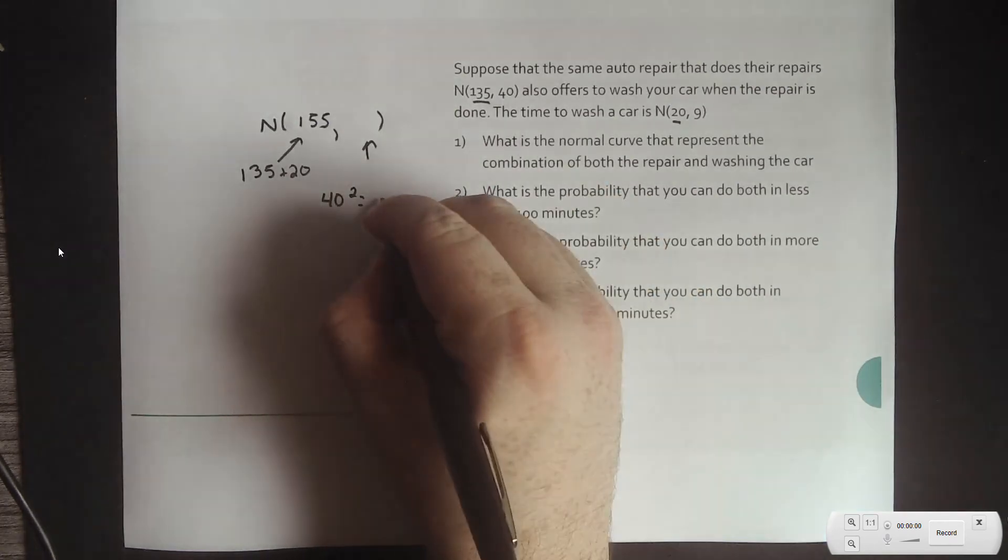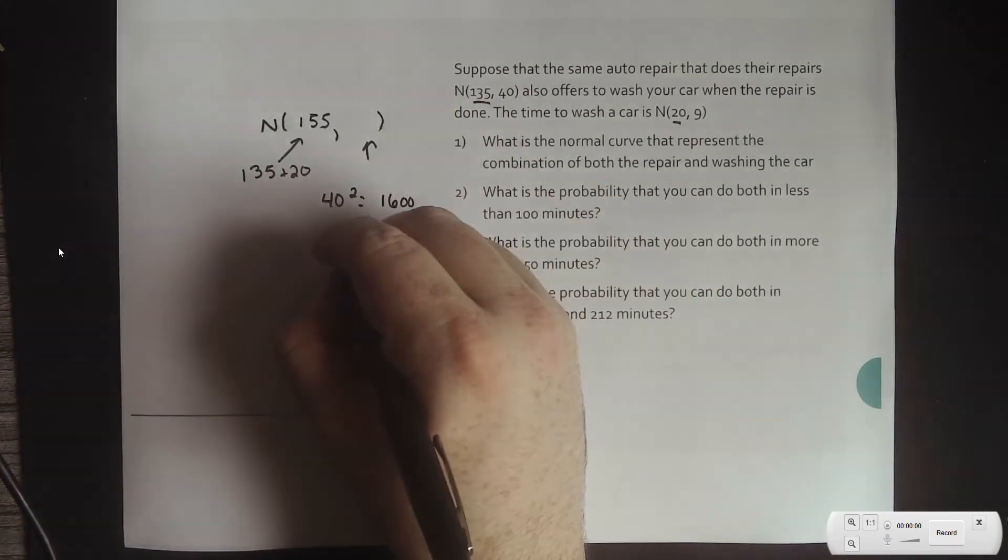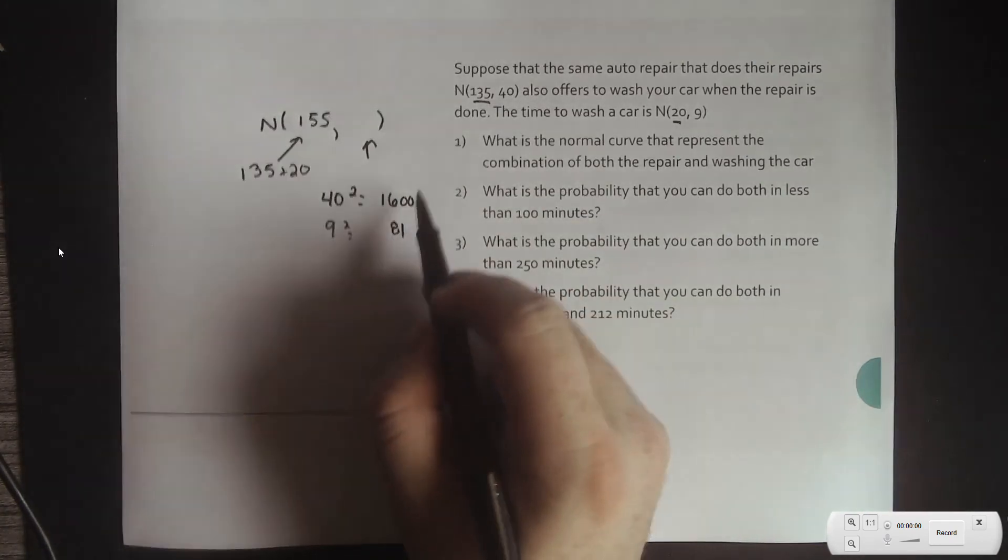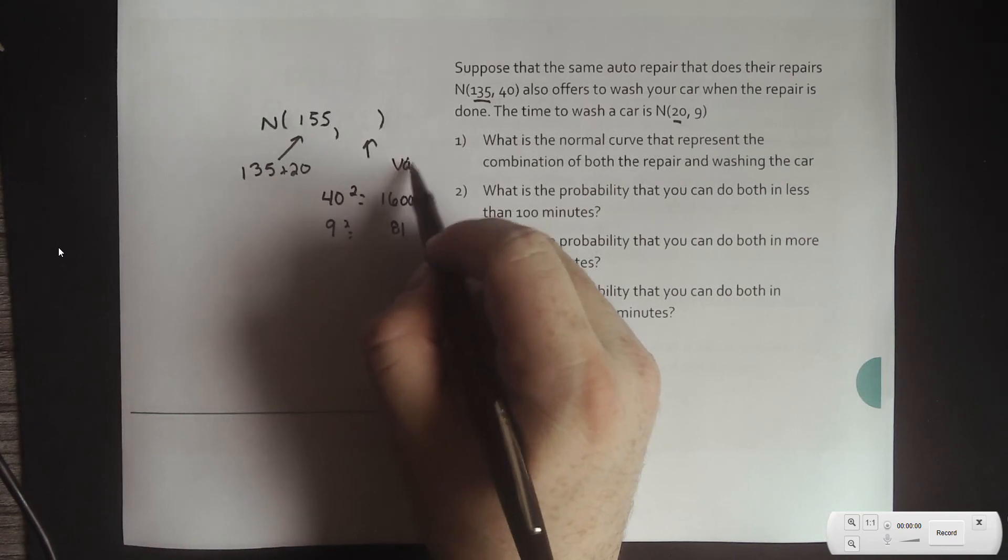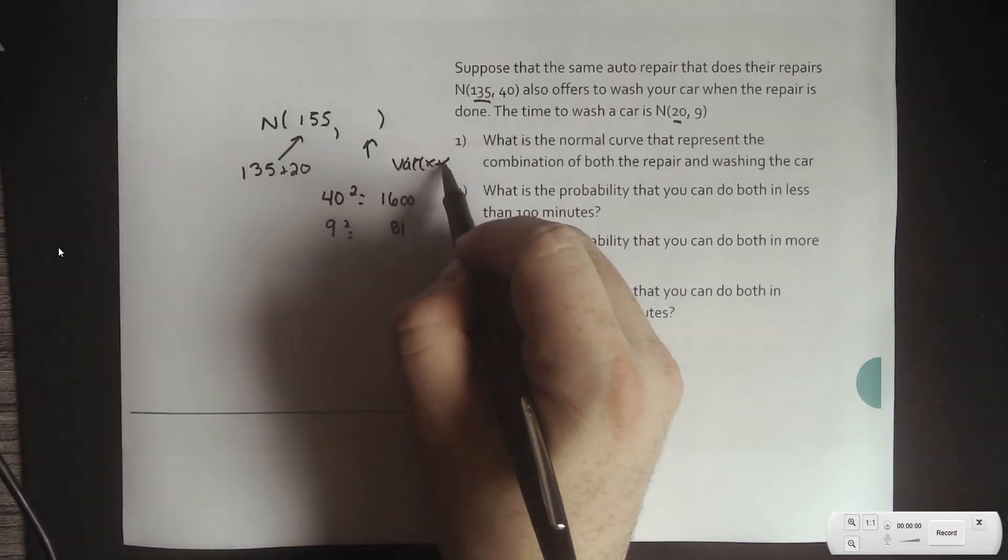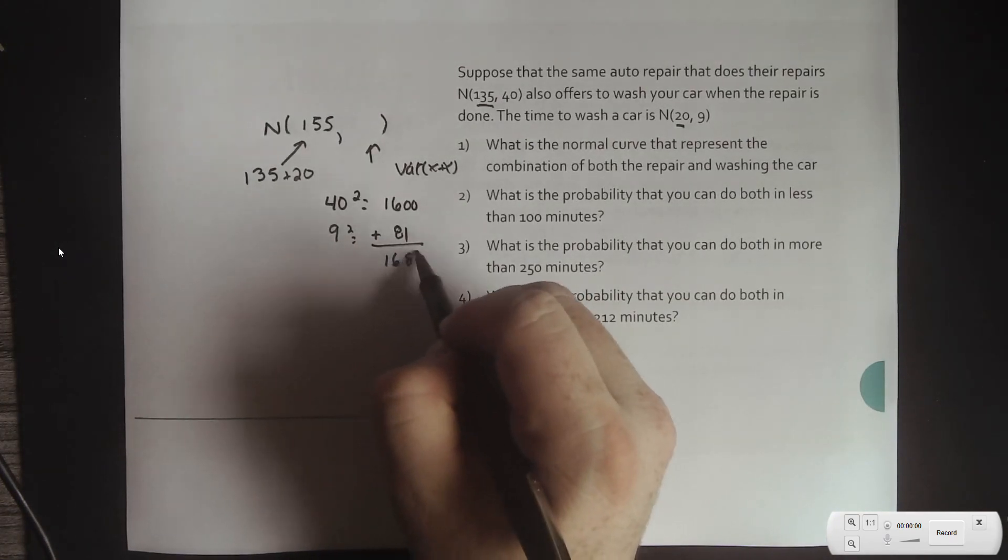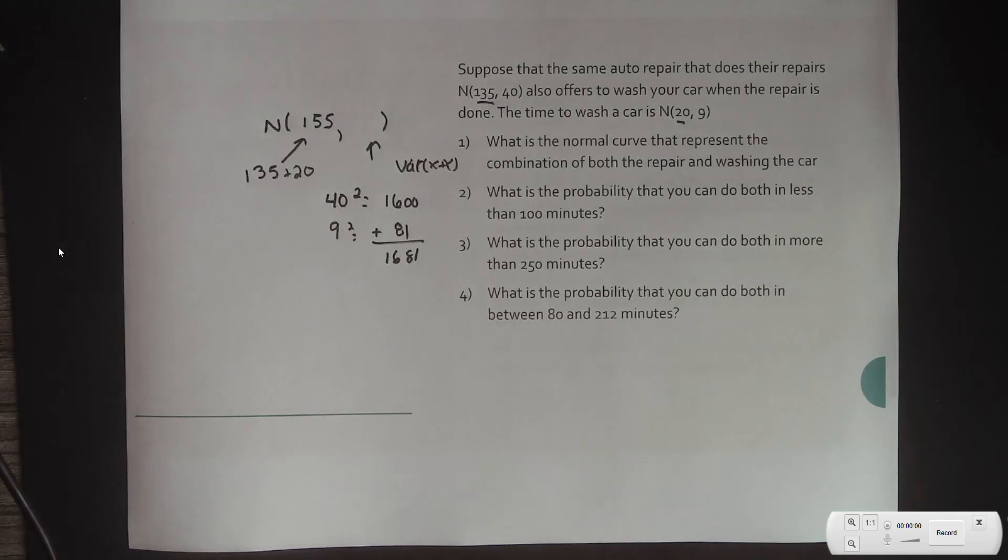So, 40 squared would give me 1,600. And 9 squared would give me 81. And now that these are the variances, all I have to do is add these together. And then, because I want the standard deviation, I then have to square root, that's 1681. And that'll give me 41.